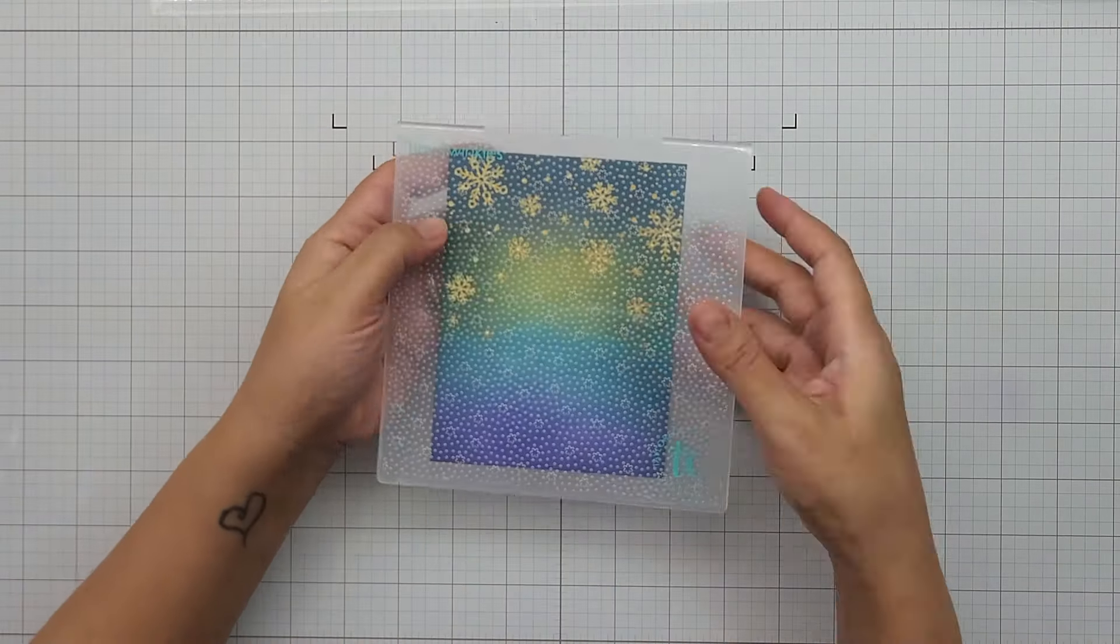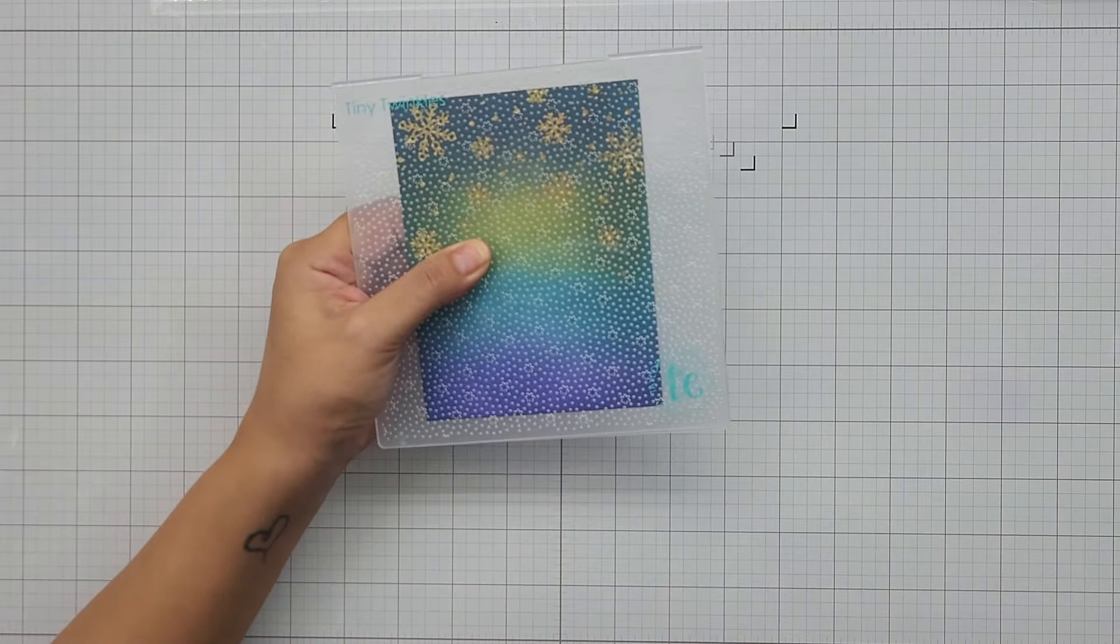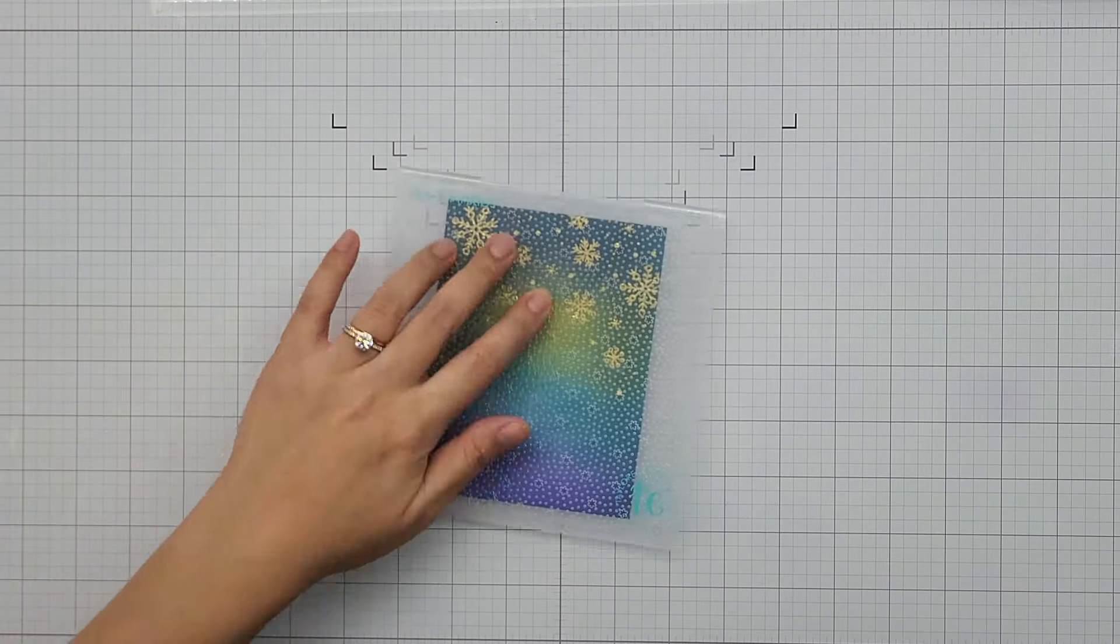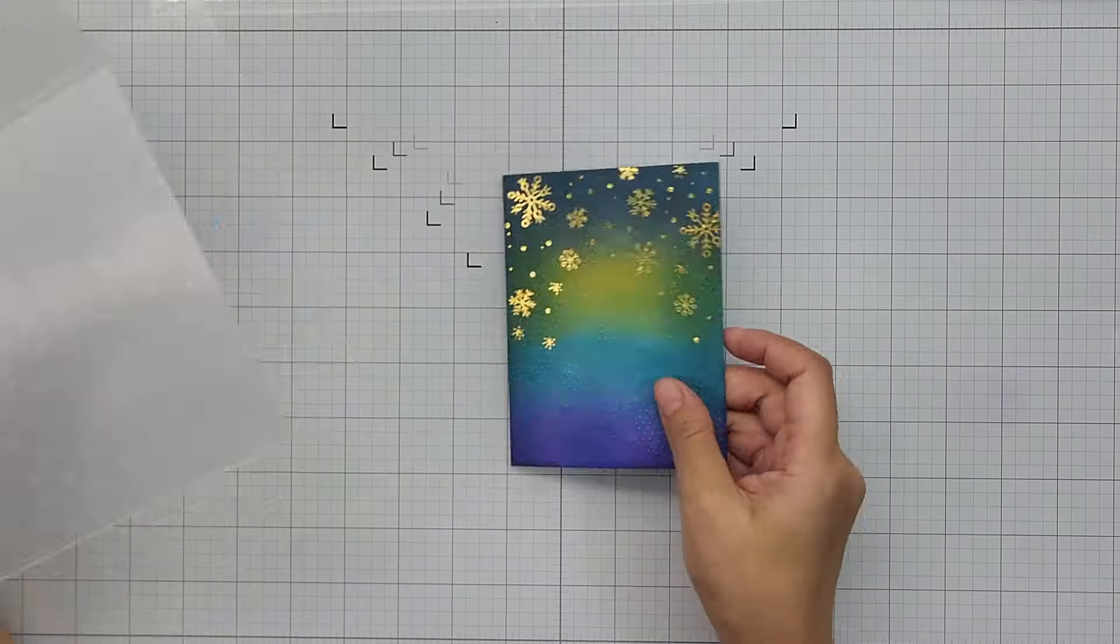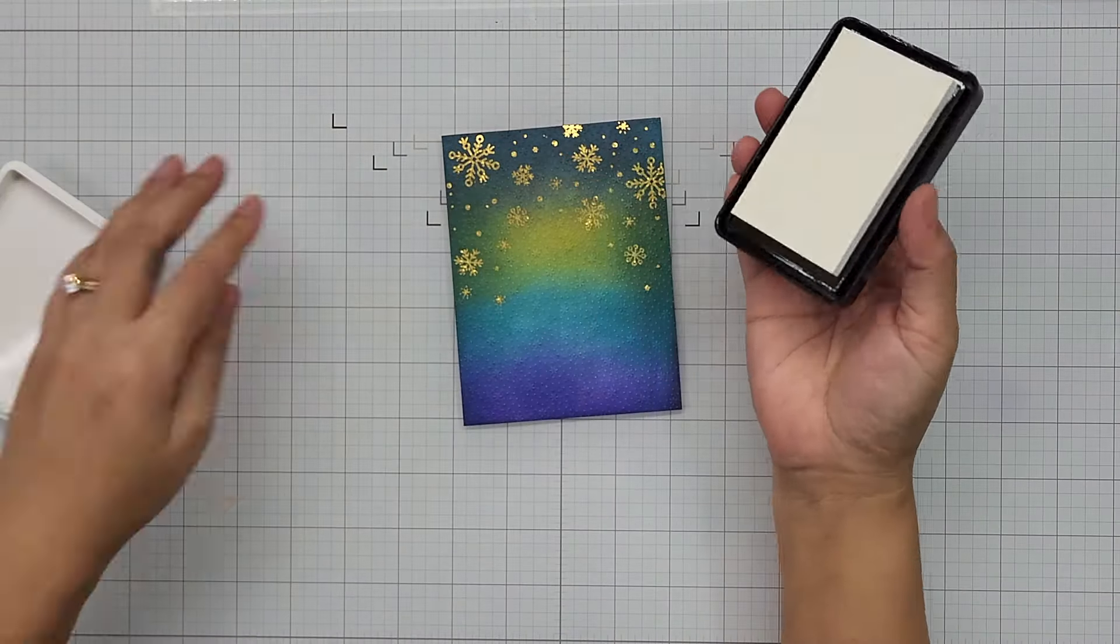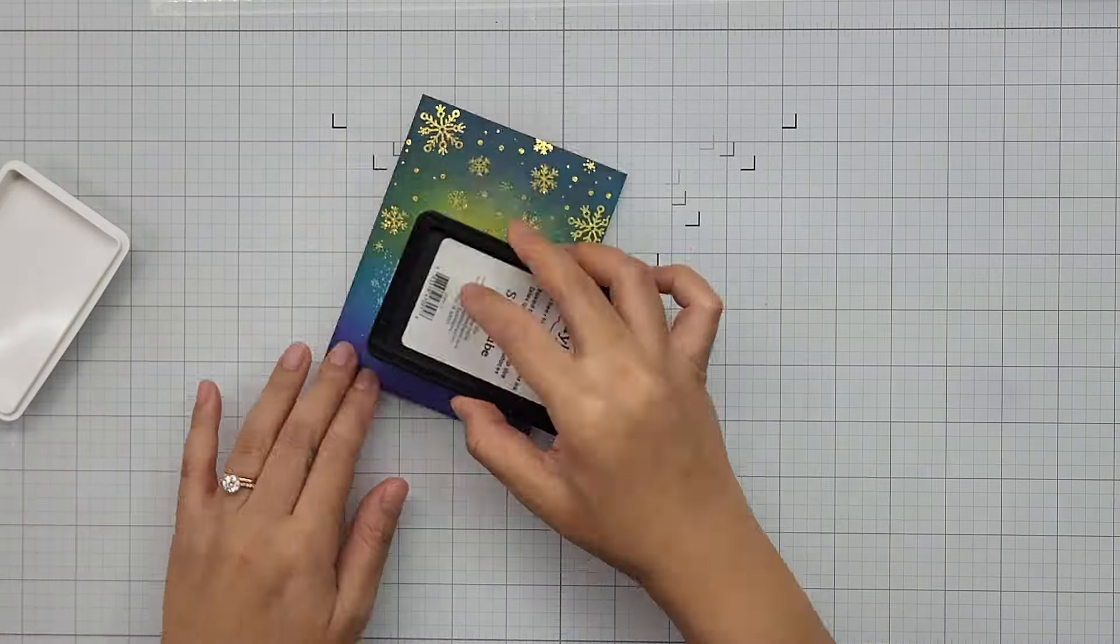Now to create more texture, I ran the Foil It panel with Tiny Twinkle embossing folder through my die cutting machine. Then going in with Sugar Cube ink, I lightly ran the ink pad over the raised area of the card panel.